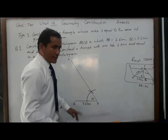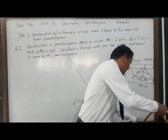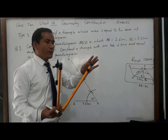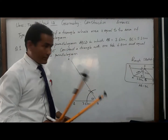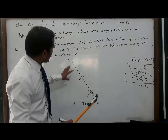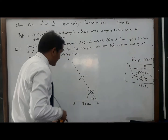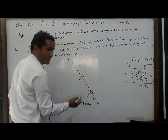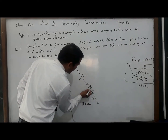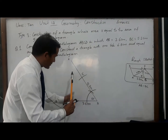Taking B as center, radius should be 5.2 centimeters — measure with the help of a scale. I have measured the radius as 5.2 centimeters. Taking B as center, cut the arc on line segment BX at C. Give the name C. Now BC is 5.2 centimeters.